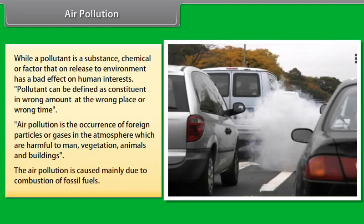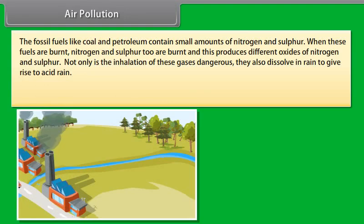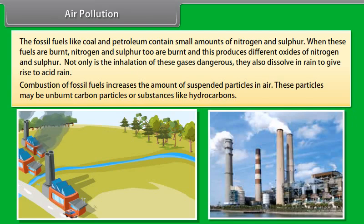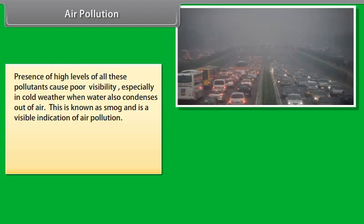The air pollution is caused mainly due to combustion of fossil fuels. The fossil fuels like coal and petroleum contain small amounts of nitrogen and sulfur. When these fuels are burned, nitrogen and sulfur too are burned, and this produces different oxides of nitrogen and sulfur. Not only is the inhalation of these gases dangerous, they also dissolve in rain to give rise to acid rain. Combustion of fossil fuels increases the amount of suspended particles in the air. These particles may be unburned carbon particles or substances like hydrocarbons. Presence of high levels of all these pollutants cause poor visibility, especially in the cold weather when water also condenses out of air. This is known as smog and is visible indication of air pollution.